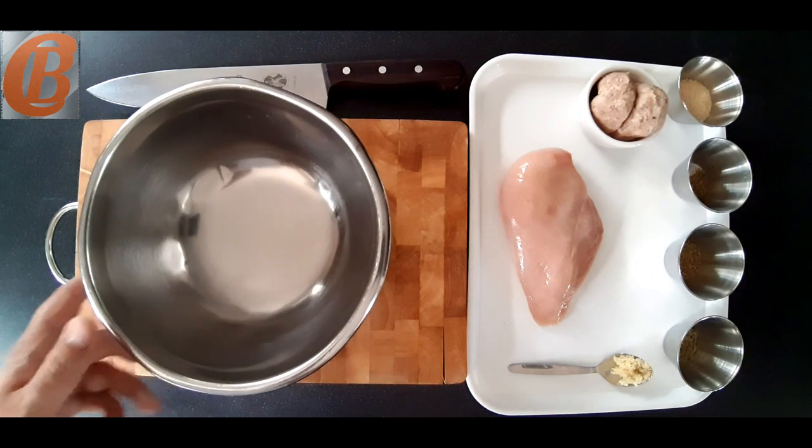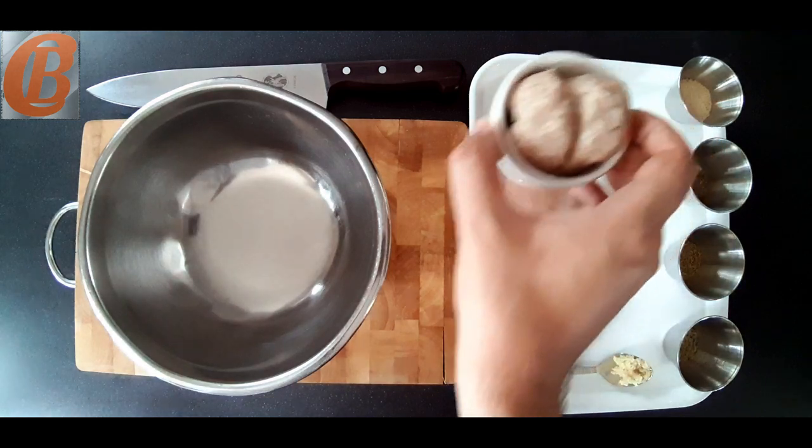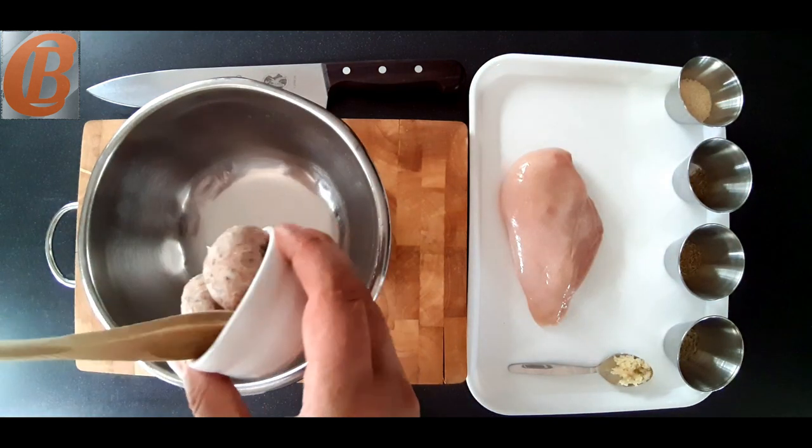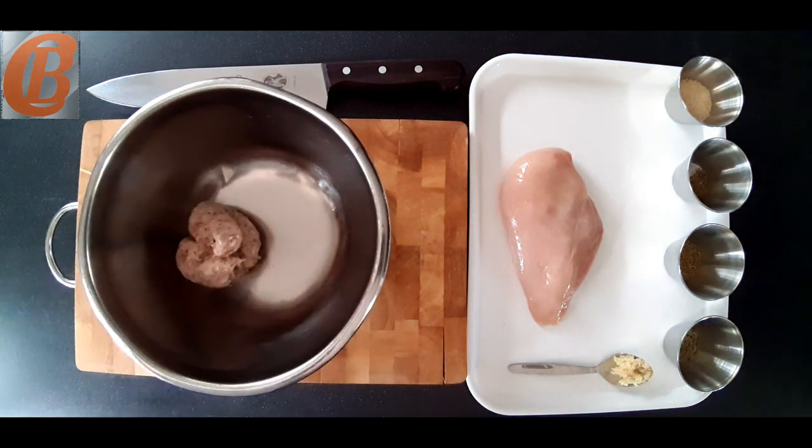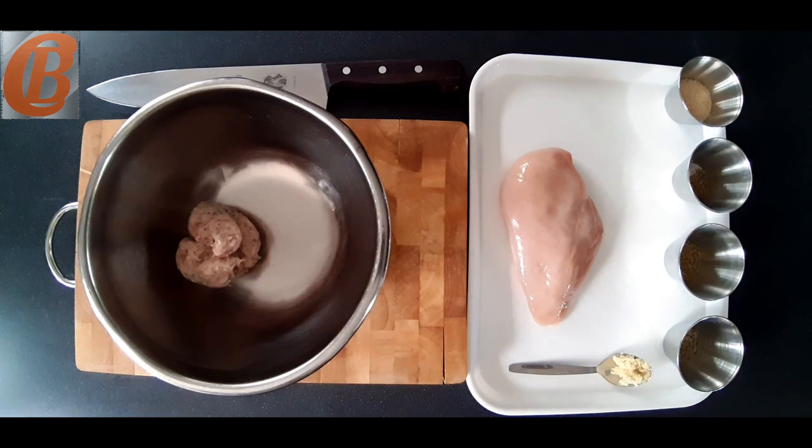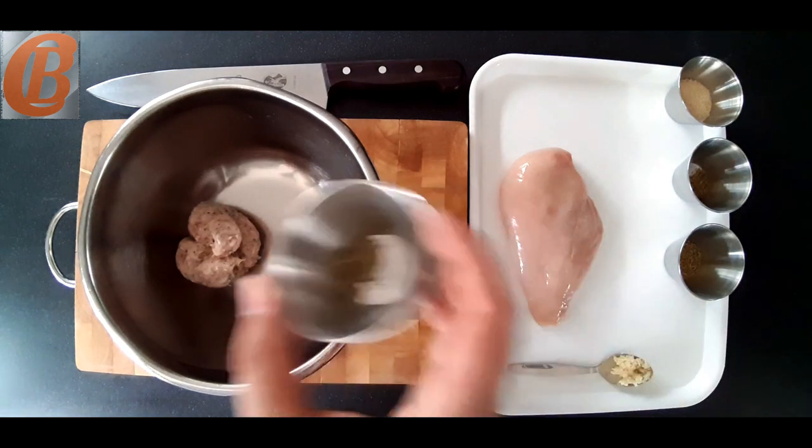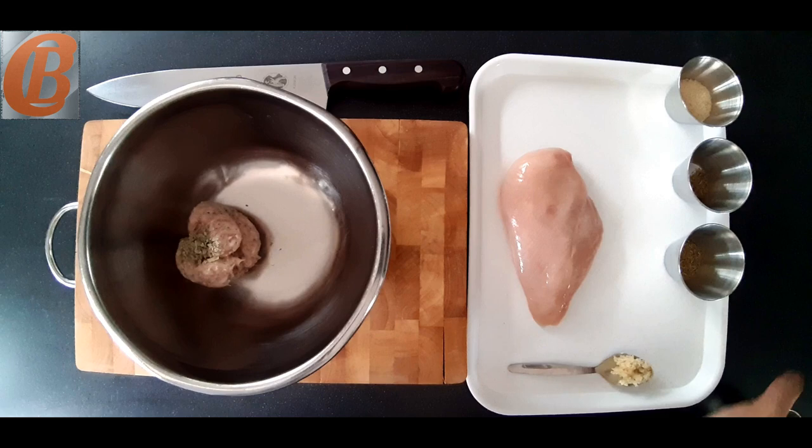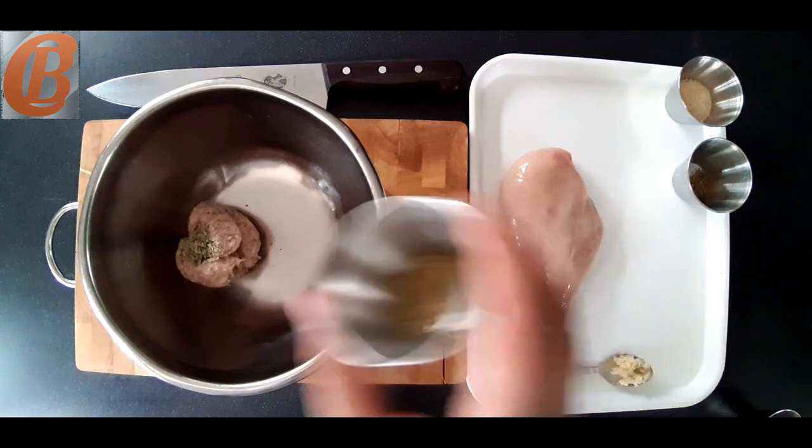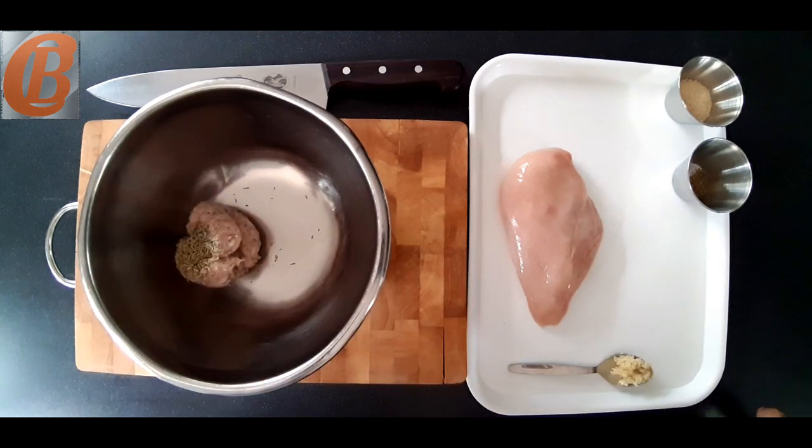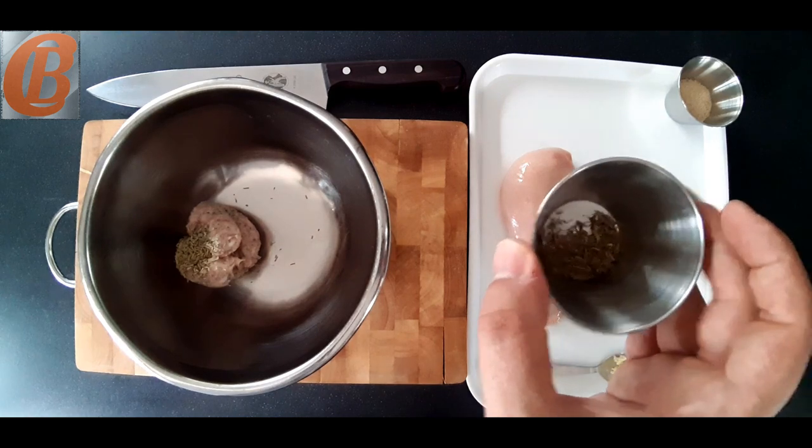We're going to start by making a fairly simple stuffing and I'm going to use some sausage meat here. This is actually sausage meat from a good quality sausage as opposed to that cheap stuff you buy in packs from your supermarket. And then we're going to add to that some thyme, some rosemary, and a little bit of tarragon.